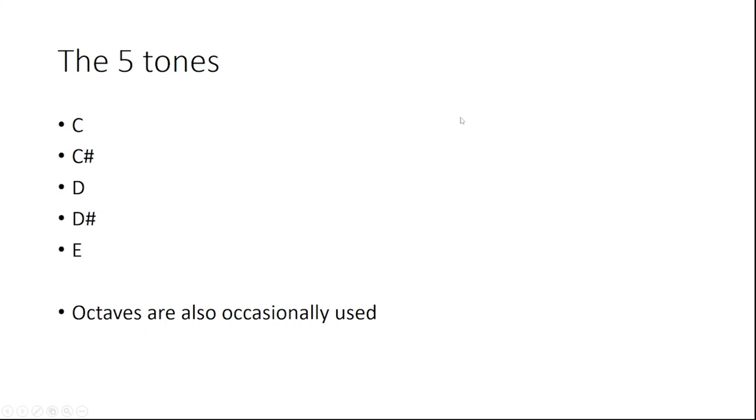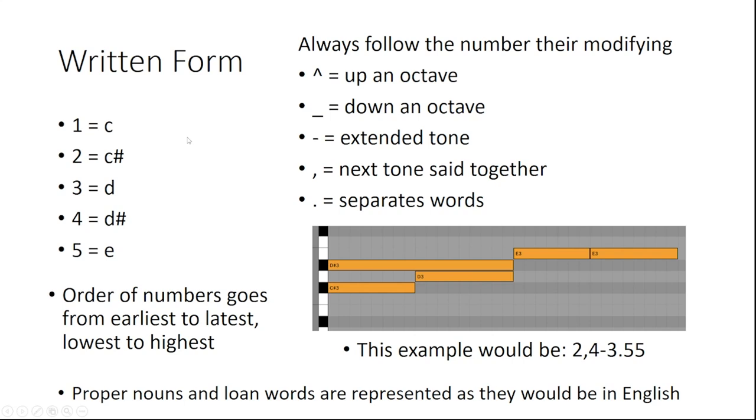So here are the five tones: C, C sharp, D, D sharp, and E. Here's the written form: 1 represents C, 2 represents C sharp, and so on and so forth.